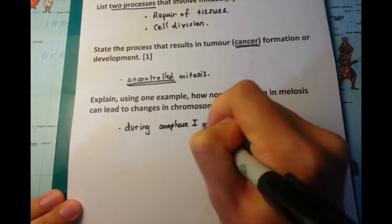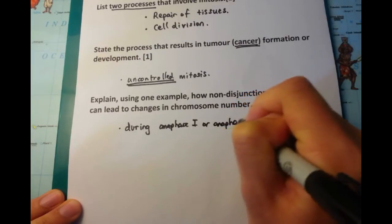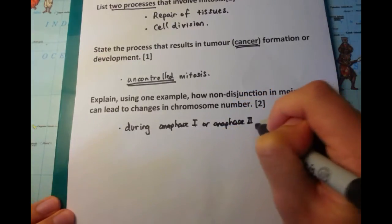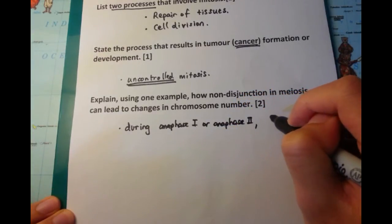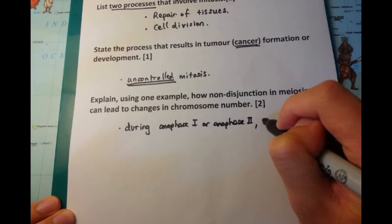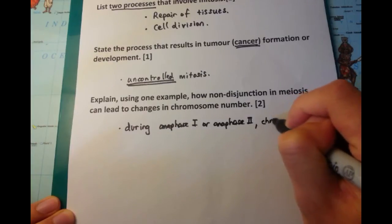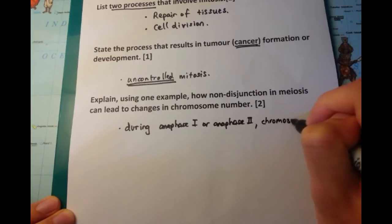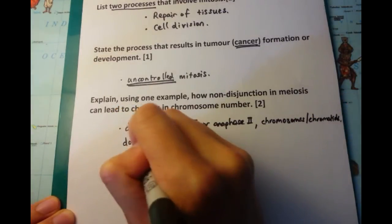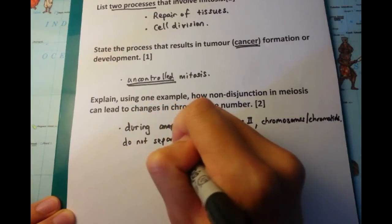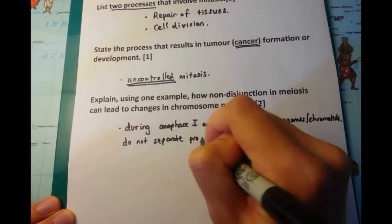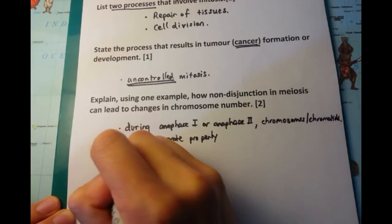The final one that we're going to go through now is explain using one example how non-disjunction in meiosis can lead to changes in chromosome number. So you need to know that non-disjunction occurs in anaphase of meiosis, either anaphase one or anaphase two. And it's because these chromosomes do not separate properly onto either poles, then you have one particular cell which has more chromosomes than the other.